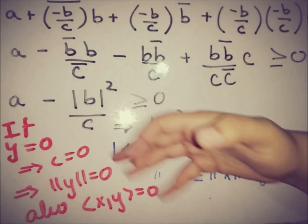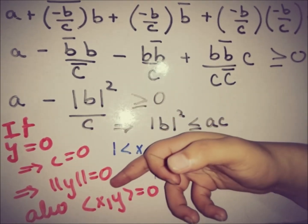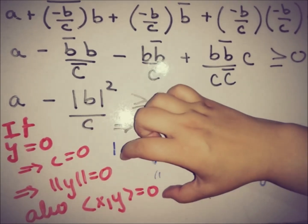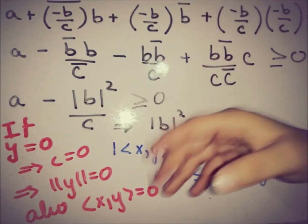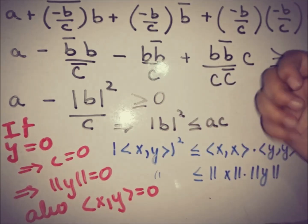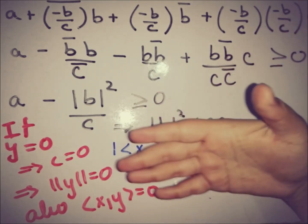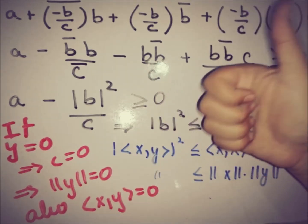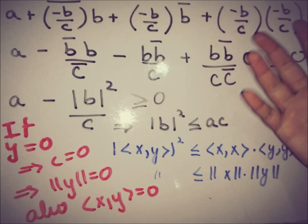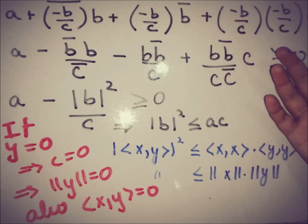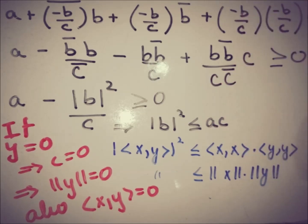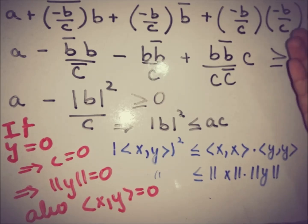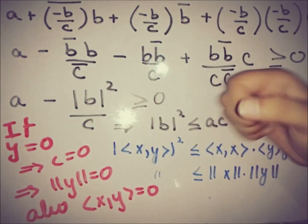Now we consider the case where y equals zero. If y = 0, then c = ⟨y, y⟩ = 0, which means ‖y‖ = 0. Also, ⟨x, y⟩ = ⟨x, 0⟩ = 0, so both sides of the inequality equal zero and the relation holds in this case as well.